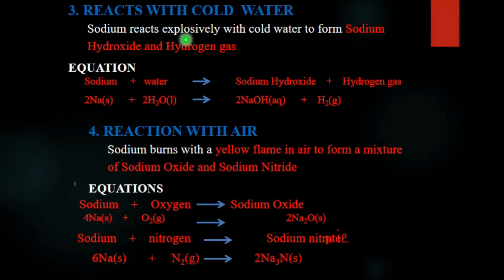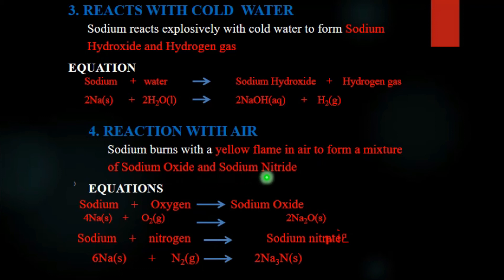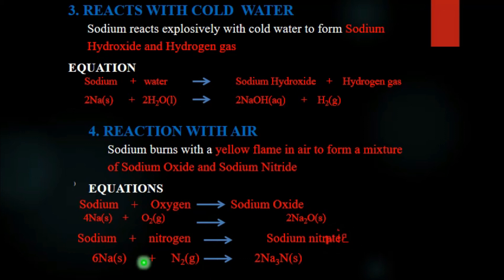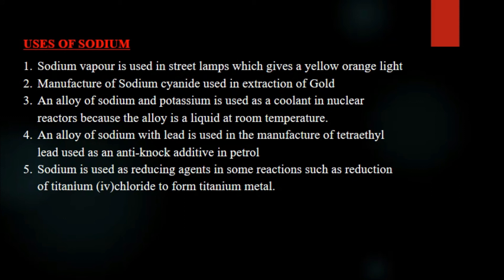Sodium reacts explosively with cold water to form two products: sodium hydroxide (an alkali — a soluble base) and hydrogen gas. Sodium burns in air with a yellow flame to form a mixture of sodium oxide and sodium nitride. Because sodium is very reactive, it also reacts with the relatively inactive part of air — nitrogen — to form sodium nitride: sodium + nitrogen → sodium nitride.